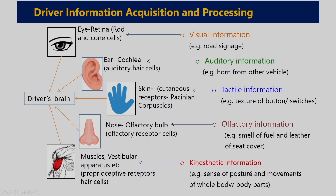Similarly, there is kinaesthetic information — for example, sense of posture, movements of the whole body or body parts. This type of visual, auditory, tactile, olfactory, and kinaesthetic information is being received by the driver while driving. This information received by various sense organs: in the eye there are rod and cone cells which are receptor cells; they are activated and the electrical signal reaches the brain.